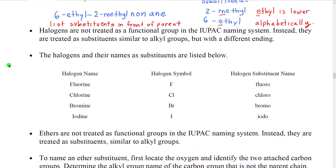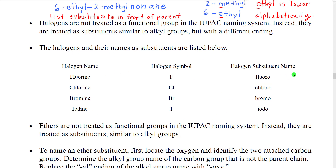Halogens are not treated as functional groups in IUPAC naming. Instead, we just treat them as substituents. Here are the halogens and their substituent names: fluorine becomes fluoro, chlorine becomes chloro, bromine becomes bromo, iodine becomes iodo. Notice they all just end in O.